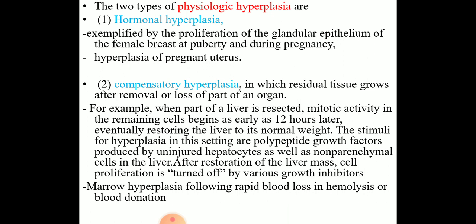Compensatory hyperplasia increases tissue mass after damage or partial resection. For example, when part of the liver is resected, mitotic activity in the remaining hepatocytes begins as early as 12 hours later, eventually restoring the liver to its normal weight. The stimuli for hyperplasia in this setting are polypeptide growth factors produced by uninjured hepatocytes as well as normal parenchymal cells in the liver. After restoration of liver mass, cell proliferation is turned off by various growth factors. Another example of compensatory hyperplasia is bone marrow hyperplasia following rapid blood loss, hemolysis or blood donation.